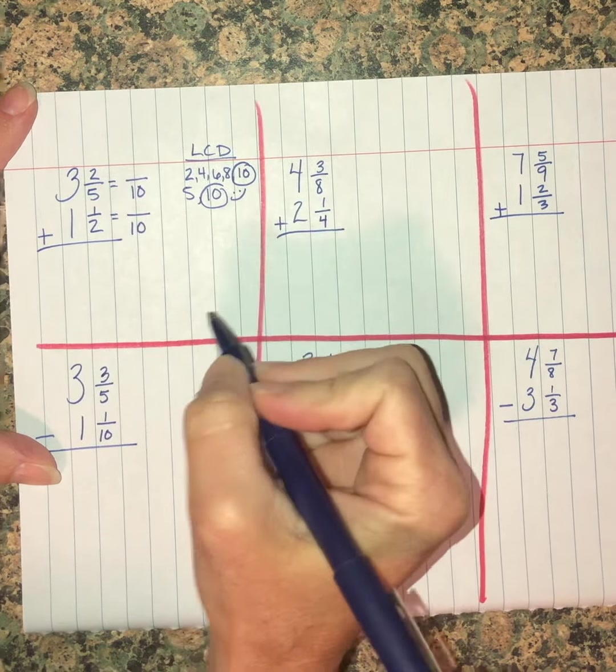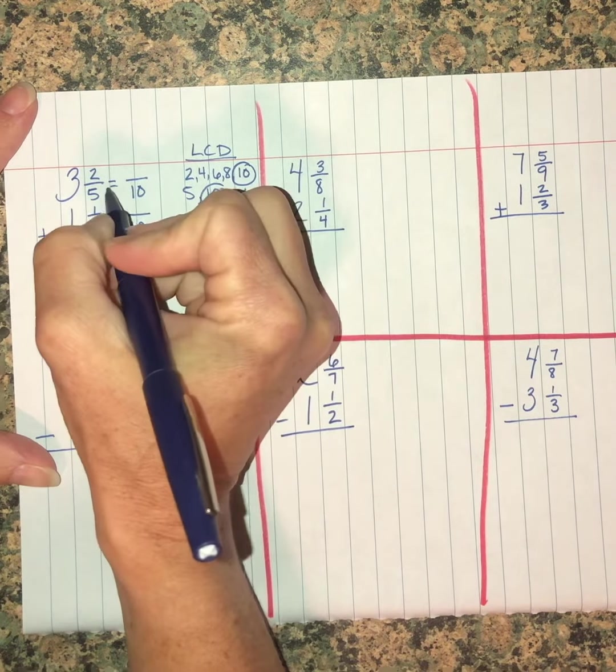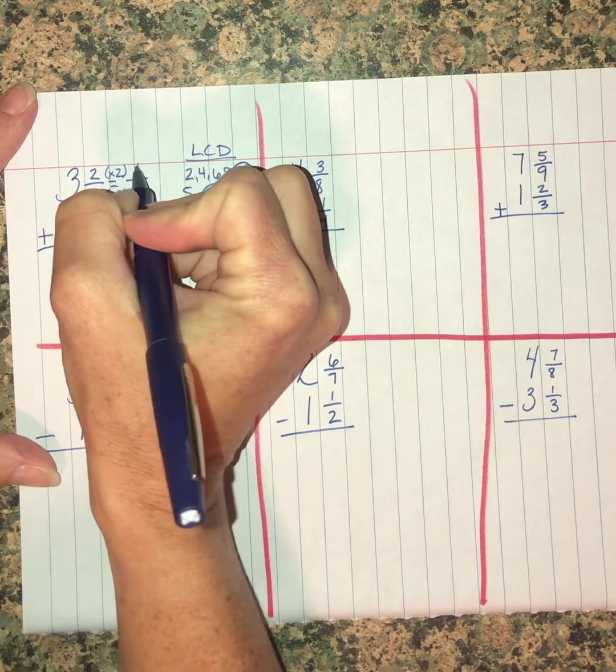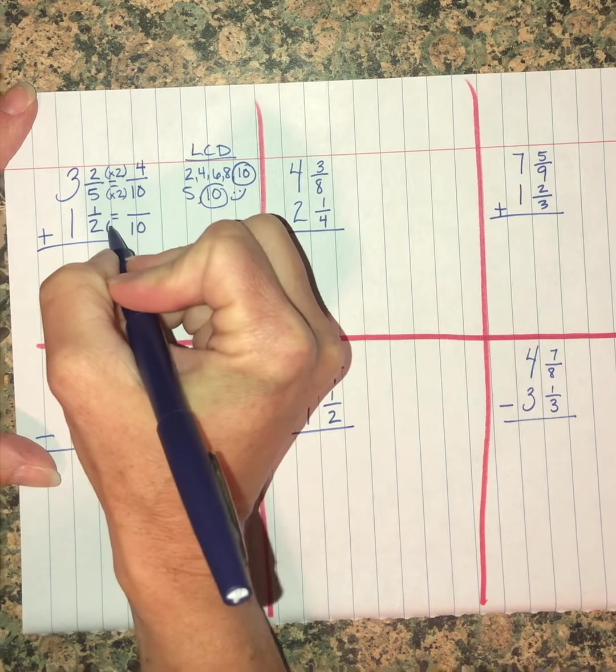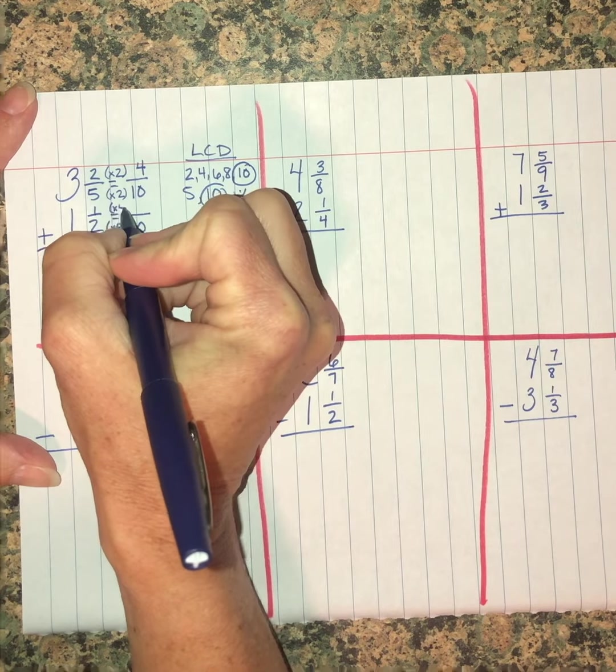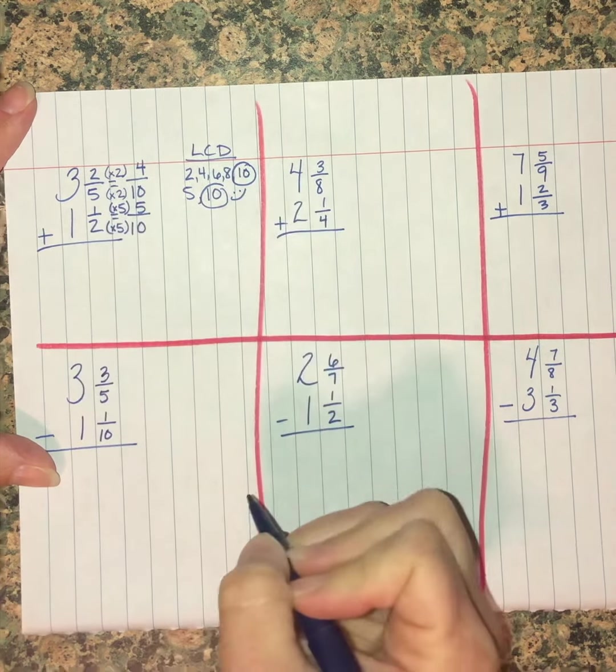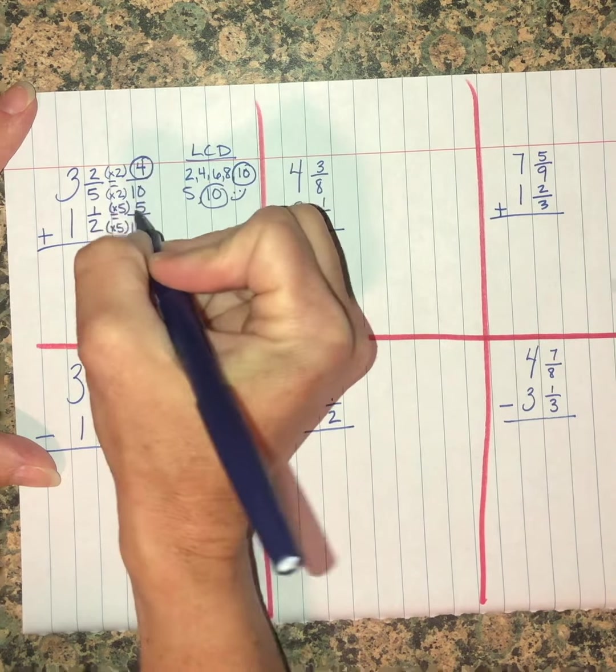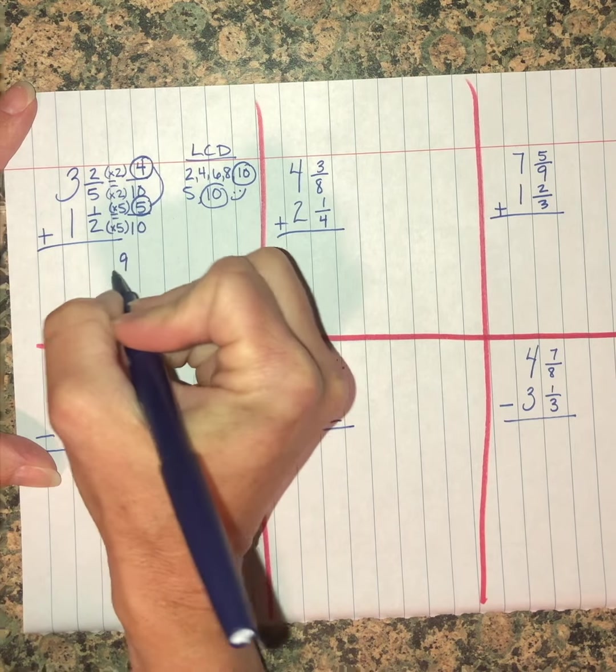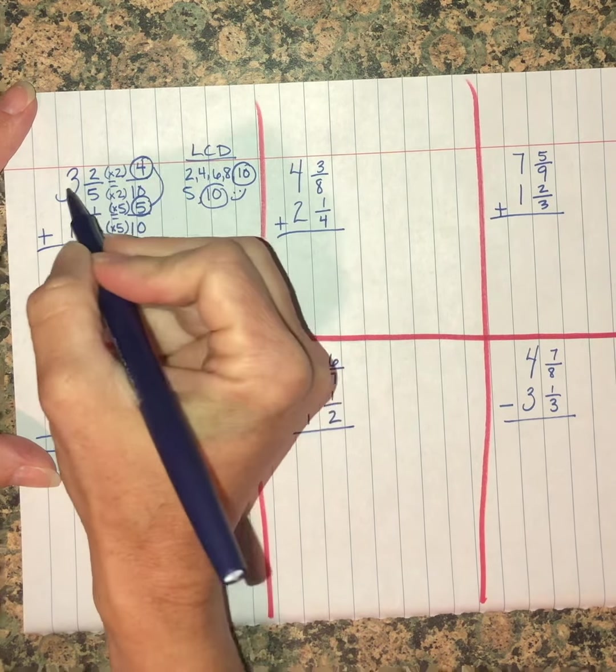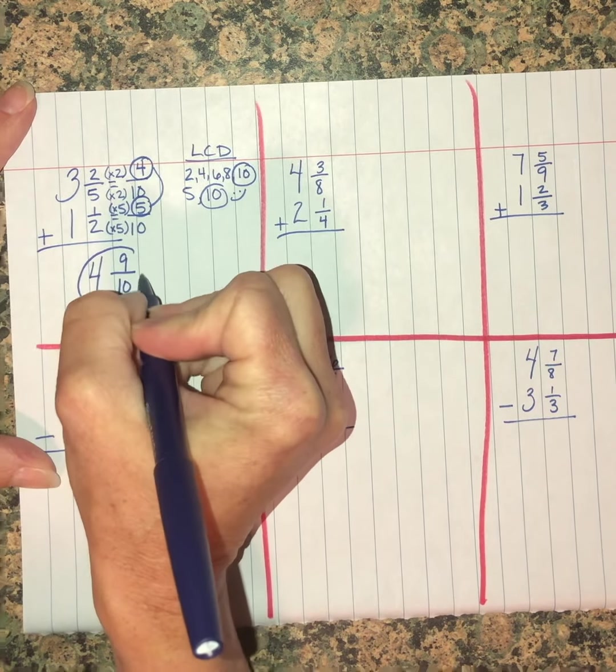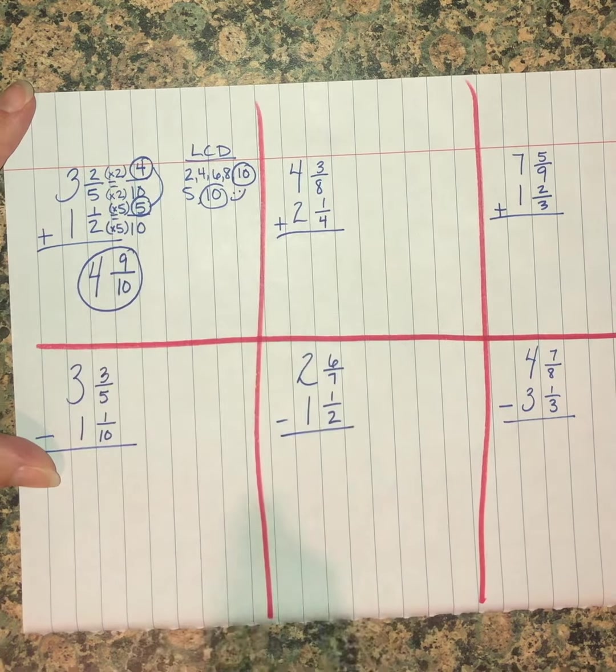So we know the denominator is going to be ten. Five times two is ten, two times two is four. Now down here, two times five is ten, one times five is five. Now I can take care of adding four-tenths and five-tenths just by putting these together and I get nine-tenths. And last, I'm just going to add three plus one. This is the easy part. And nine-tenths cannot be simplified, so I'm done.